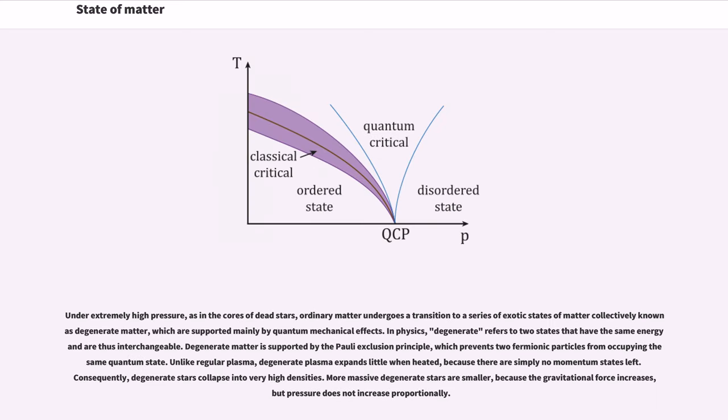Under extremely high pressure, as in the cores of dead stars, ordinary matter undergoes a transition to a series of exotic states of matter collectively known as degenerate matter, which are supported mainly by quantum mechanical effects. In physics, degenerate refers to two states that have the same energy and are thus interchangeable. Degenerate matter is supported by the Pauli exclusion principle, which prevents two fermionic particles from occupying the same quantum state. Unlike regular plasma, degenerate plasma expands little when heated, because there are simply no momentum states left. Consequently, degenerate stars collapse into very high densities. More massive degenerate stars are smaller, because the gravitational force increases, but pressure does not increase proportionally.